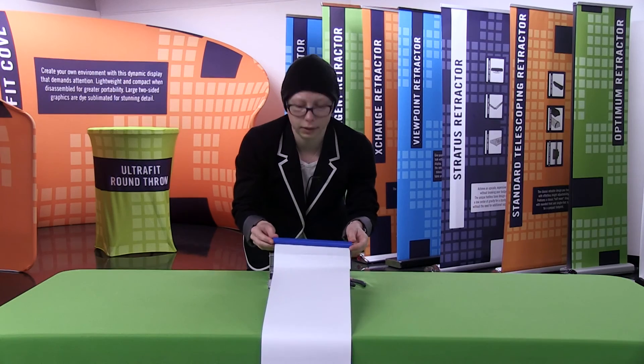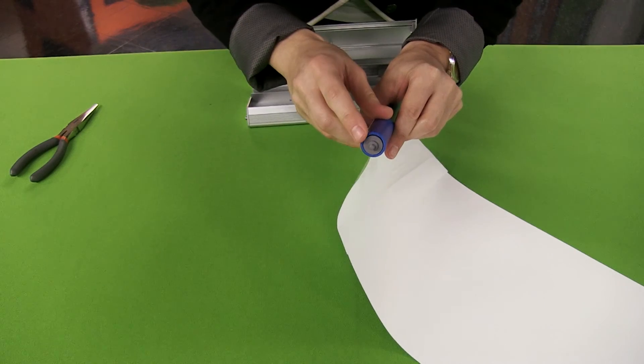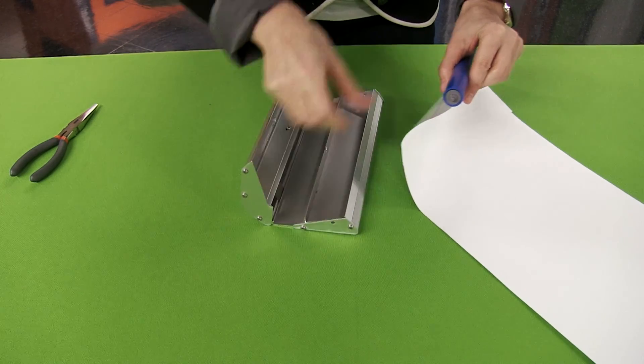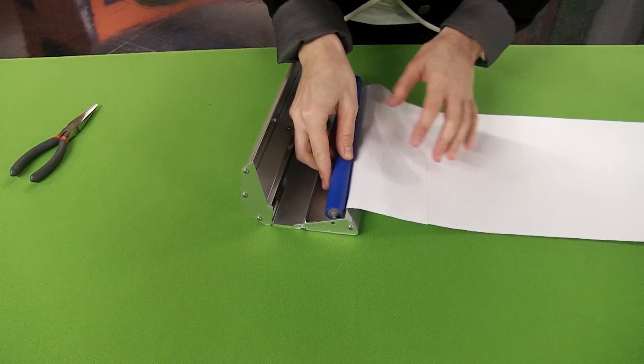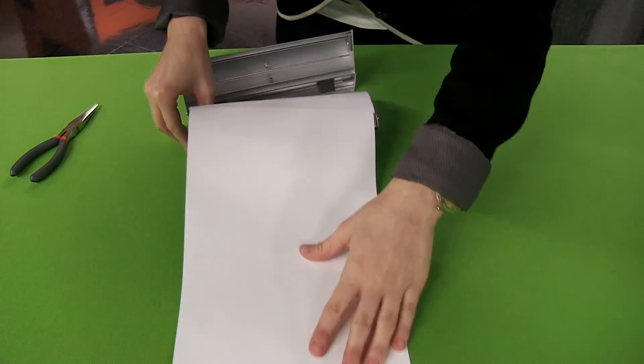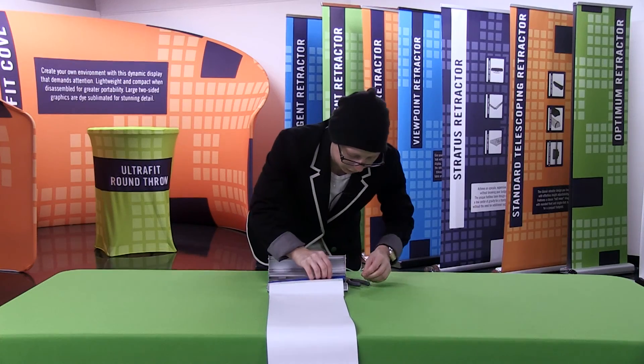Now that I have my graphic completely unrolled, I'm going to insert the circle side of the roller back into the circle side of the base. The square side is the side we are going to be tensioning.